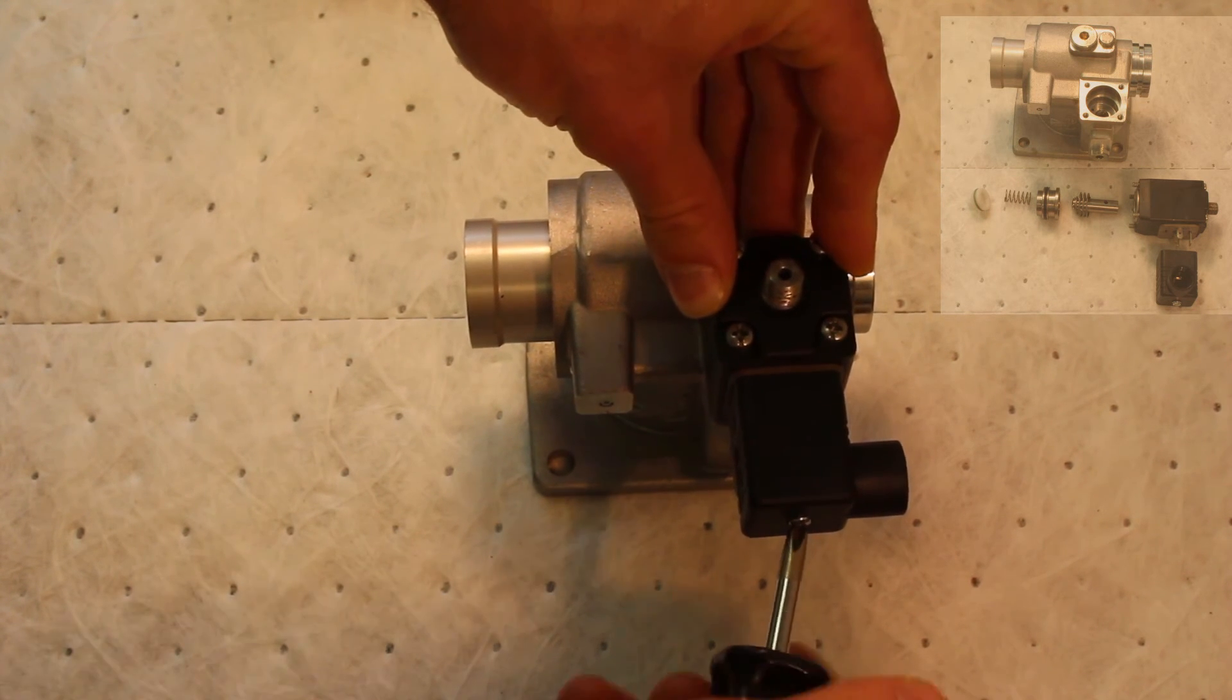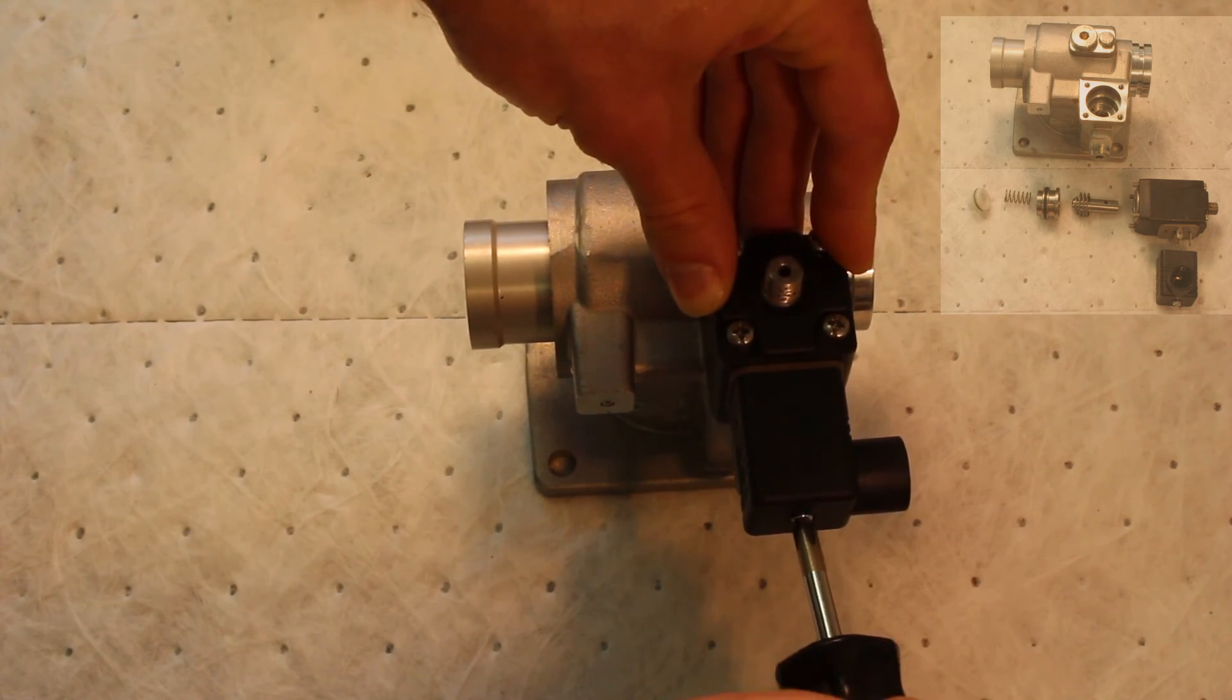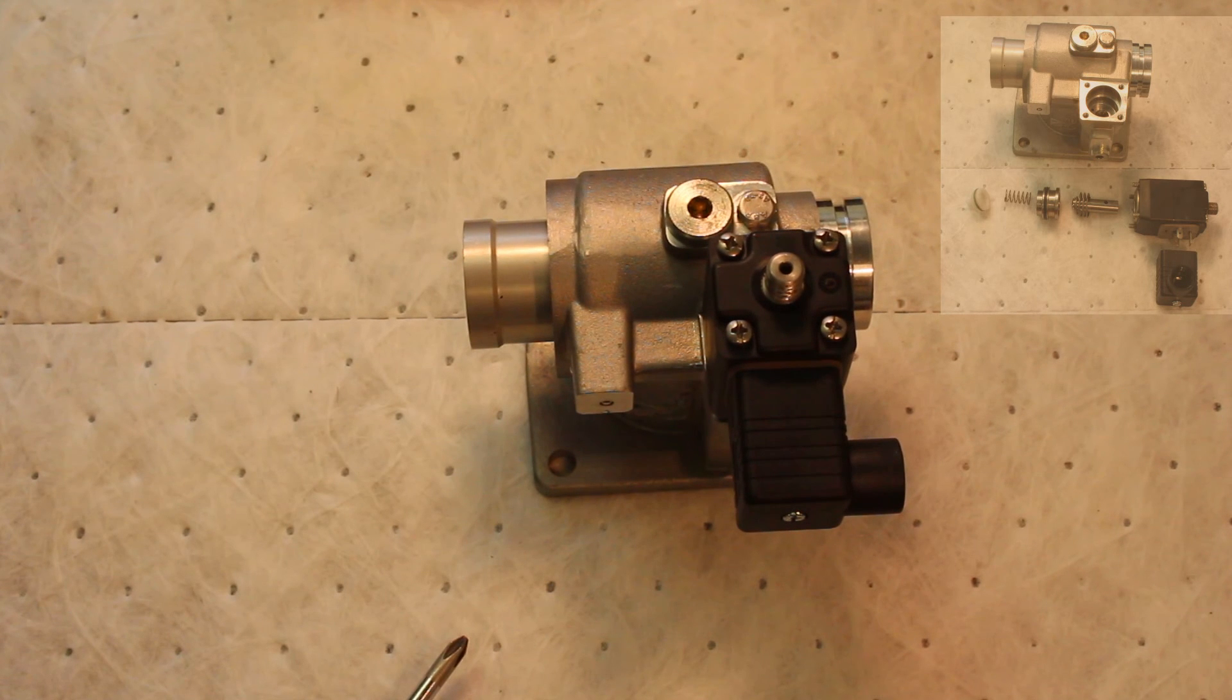Finally, reinstall the cord cap onto the solenoid valve and tighten the single retaining bolt. Use light tension on this bolt as it is easy to strip the threads from the solenoid valve body.